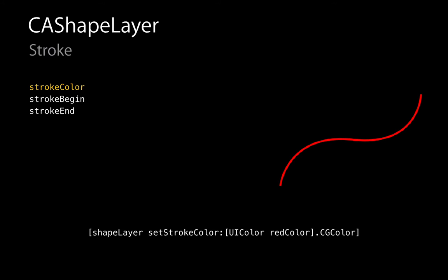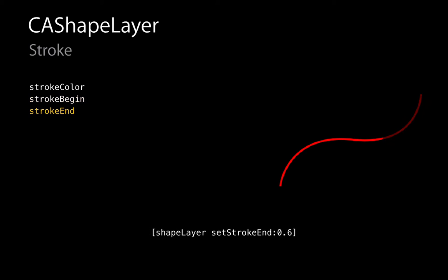Stroke begin and stroke end are particularly interesting. Stroke begin defines how far into the line we're going to begin stroking it — by setting stroke begin to 0.2, we skip drawing the first 20% of the line. Stroke end defines how far from the end we're going to draw the path — setting it to 0.6 means we don't draw the final 60%. This is very powerful for a download control: you could take download progress from 0 to 100% and directly map it onto the stroke end property, which is animatable, so CA Shape Layer automatically animates between states.